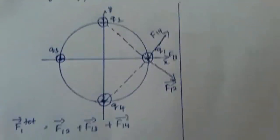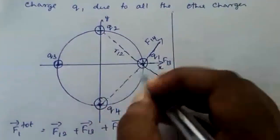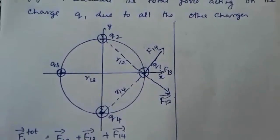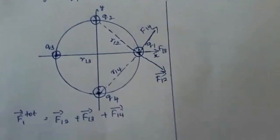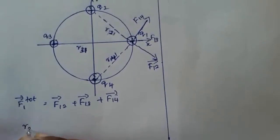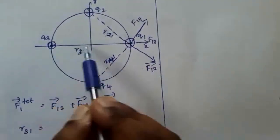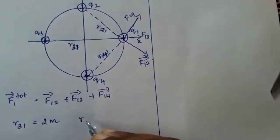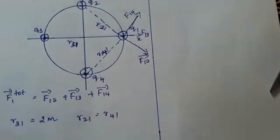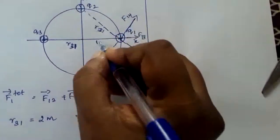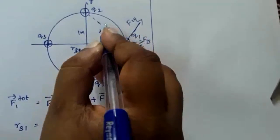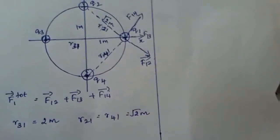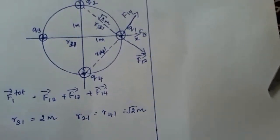From the figure we can find the distances. R31 is equal to the diameter of the circle: since the radius is 1 meter, R31 equals 2 meters. R21 and R41 can be found using the Pythagorean theorem — since both sides are 1 meter, the distance is root 2 meters. So R21 equals R41 equals root 2 meters.